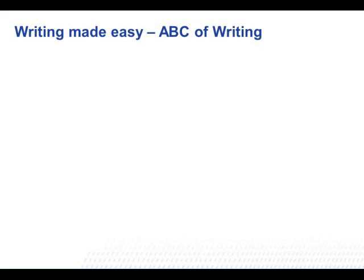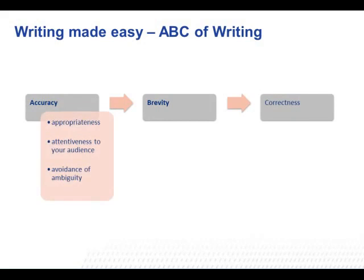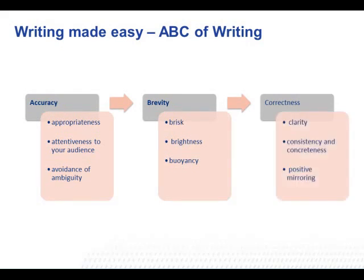Let us look at writing made easy with A, B, C of writing. A stands for accuracy, B for brevity and C for correctness. Accuracy involves appropriateness, attentiveness to your audience and avoidance of ambiguity. Brevity is to be brisk, bring brightness in your writing and buoyancy. Correctness reflects clarity, consistency and concreteness and positive mirroring.